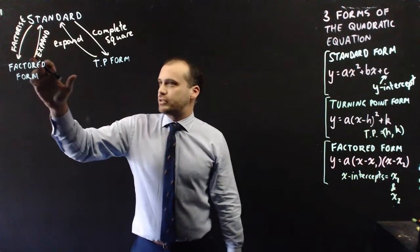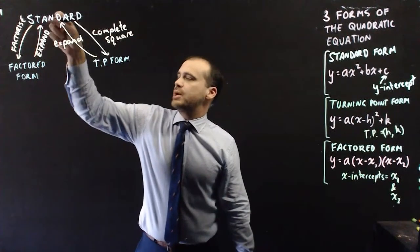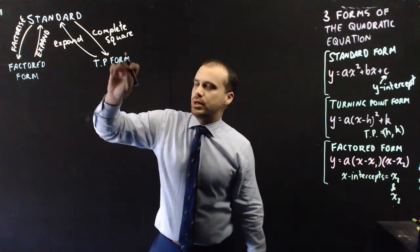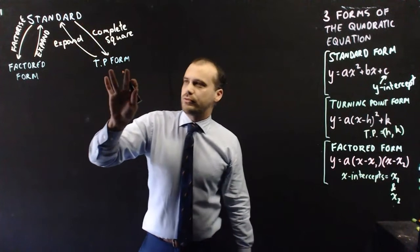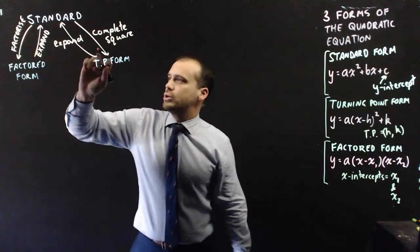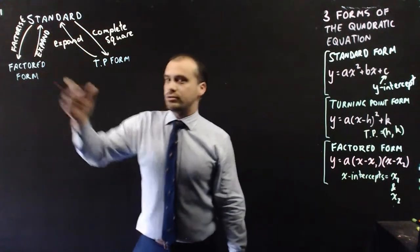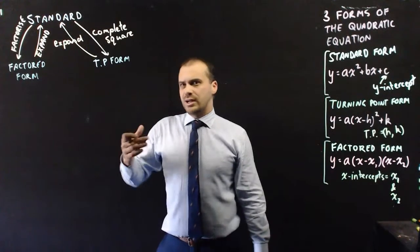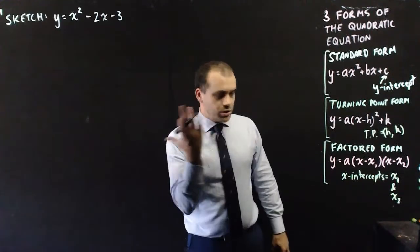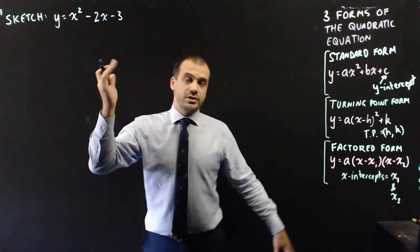If you want to go from factored form to turning point form, you expand into standard form and complete the square. If you want to go from turning point form to factored form, you expand and then factorize. It's a little bit of a journey. So you could get asked to sketch a quadratic in any of these forms.